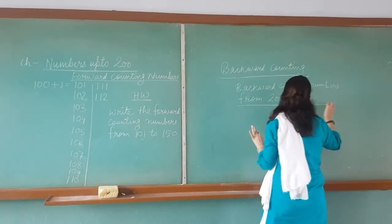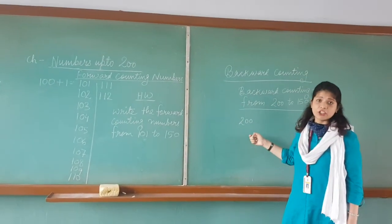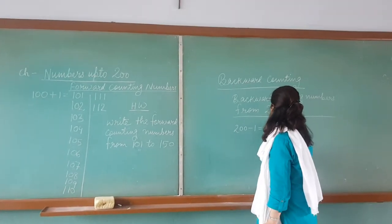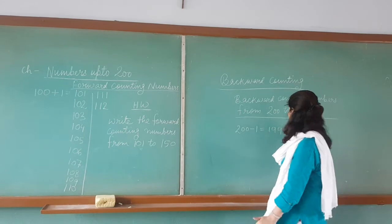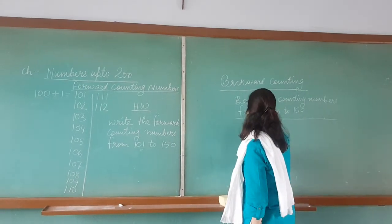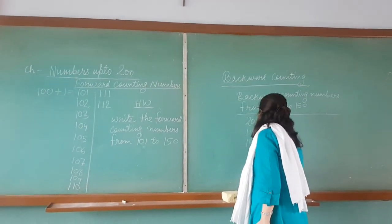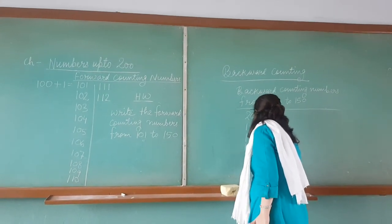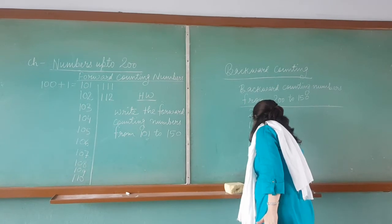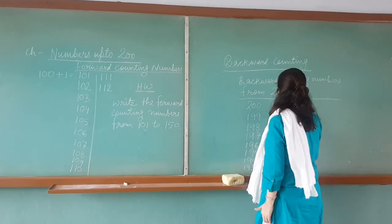How are we going to do that? We will start with 200. Then what is the predecessor of this number? We have to subtract minus 1 — that means you will get the predecessor of this number. So it will come as 199. Then again you subtract 1, it will come as 198. In the same manner you have to write: 200, 199, 198, 197, 196, 195, 194, 193, 192, 191.